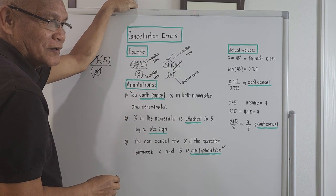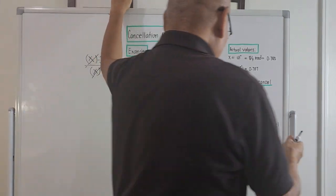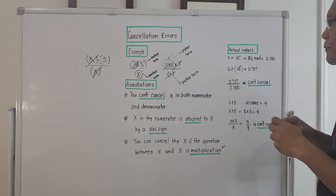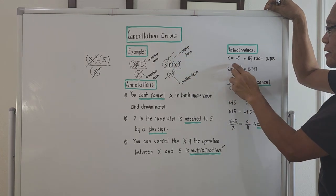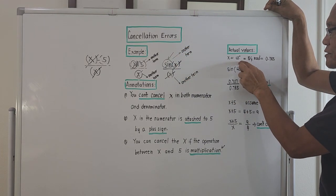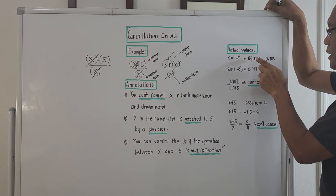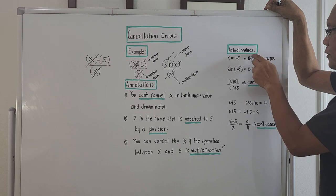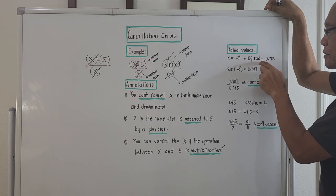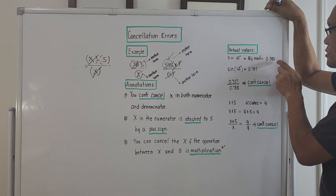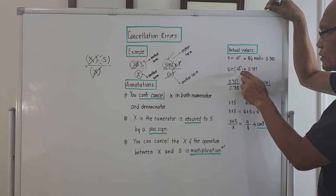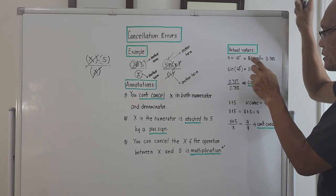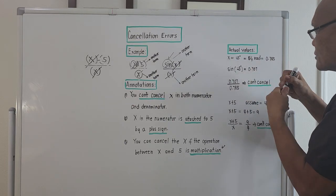Let's bring out an actual example. If x is 45 degrees, it is equivalent to π over 4 radians, which is approximately 0.785. And if we take the sine of 45 degrees, it is 0.707.